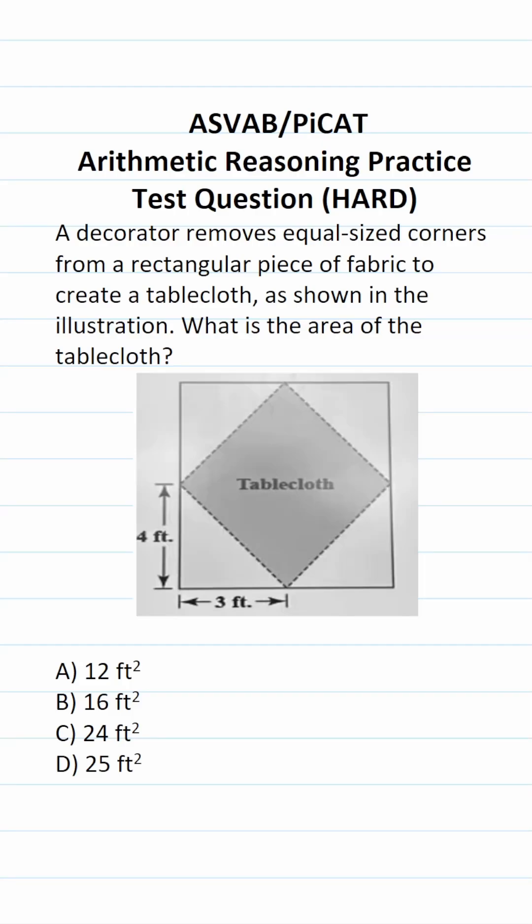This arithmetic reasoning practice test question for the ASVAB and PiCAT says a decorator removes equal-sized corners from a rectangular piece of fabric to create a tablecloth as shown in the illustration. What is the area of the tablecloth?